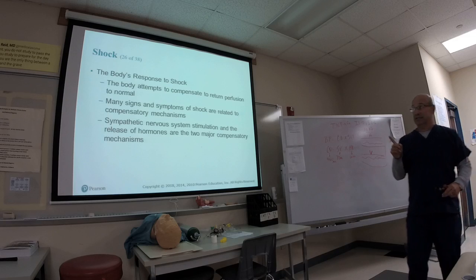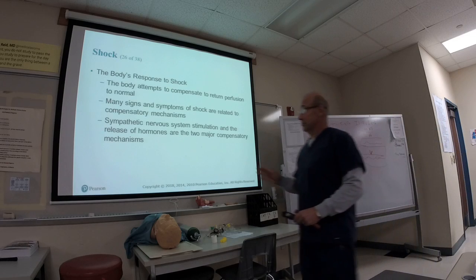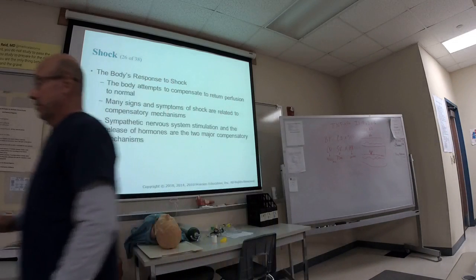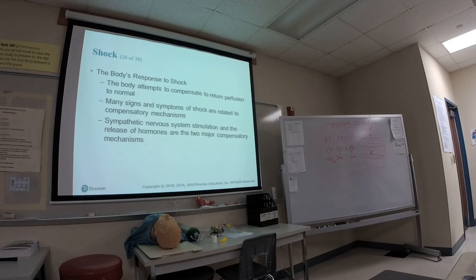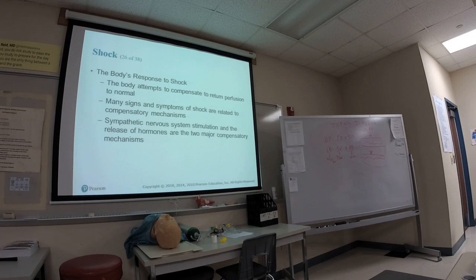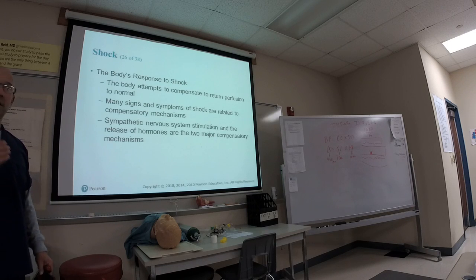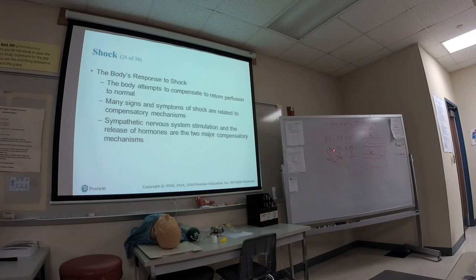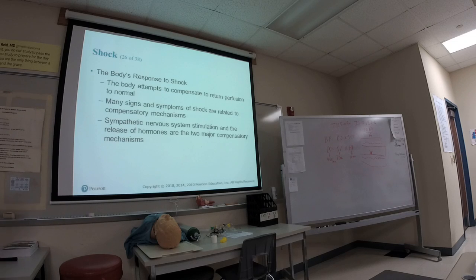All other types of shock produce tachycardia because of the drop in blood pressure. The body recognizes the bleeding or fluid loss, and the heart rate increases to compensate for the loss of cardiac output. It increases heart rate to make up for decreased cardiac output. A sustained tachycardia — where the patient remains continuously tachycardic — is one of the first signs the patient is in shock.